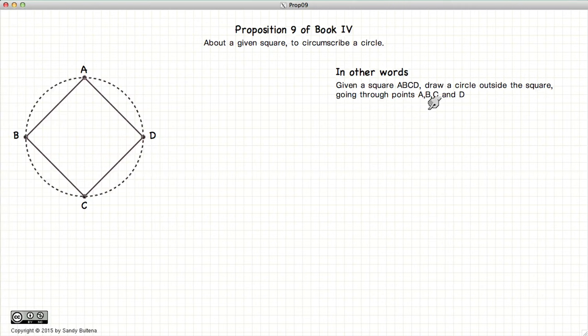In this proposition we will demonstrate how to take a square and to draw a circle around the square such that the circle passes through the vertices of the square.